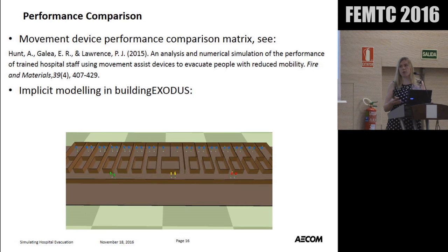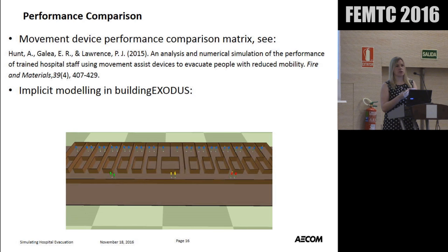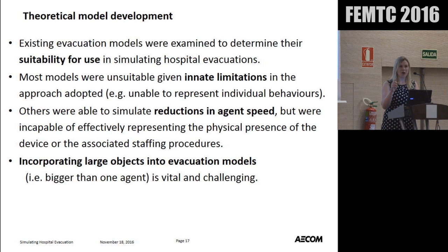We used the data to compare device performance and also to implicitly model in building Exodus — essentially what Virginia did with Steps and Pathfinder. We used group behaviors in the micro-simulation models and interim destination points to represent groups coming together, picking up a patient, delaying for preparation time, traveling at the noted horizontal speed, going through doors with that delay, and going down stairs at that speed. This came out with good results and solid verification for the techniques — as long as you only have one device.